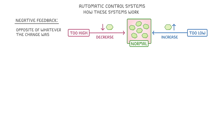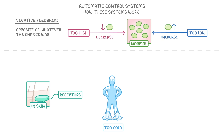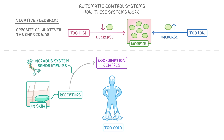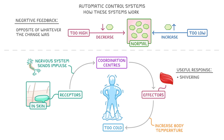To demonstrate this, let's imagine a scenario. Say we walk into a room but it's really cold. The low temperature will be detected by receptors such as in our skin, and the nervous system will then send impulses to coordination centres like the brain and spinal cord. These interpret the information and then send another set of signals to the effectors, such as our muscles, that can carry out useful responses like shivering. Given a bit of time, this shivering will increase our body temperature and we'll return to normal.